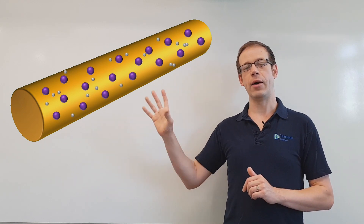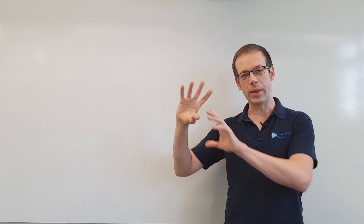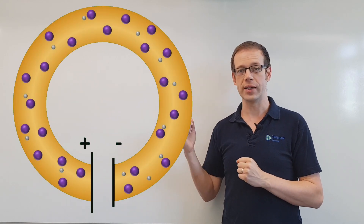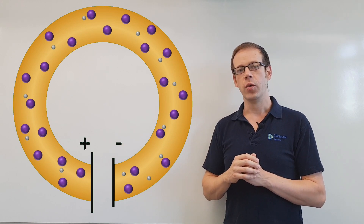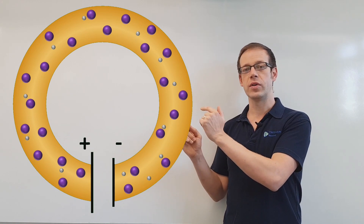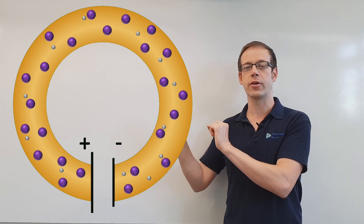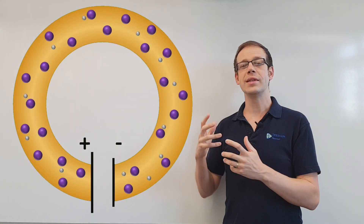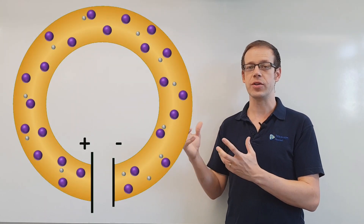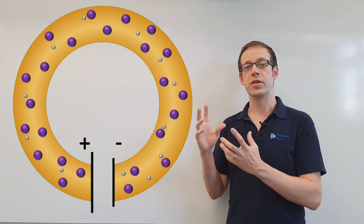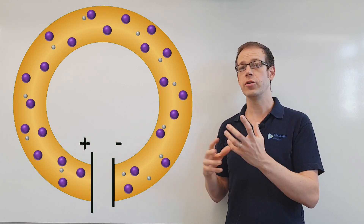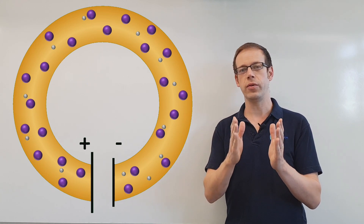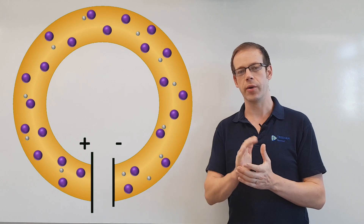Now if we take our piece of copper bar and bend it around so that it forms a loop, and we connect the two ends of that loop to a cell as you can see in this image, we've still got those individual copper atoms with the 29th free electron sitting around them. When this circuit is energised the electrons are going to move in a specific direction - they're no longer going to drift about randomly. So which way do you think the electrons are going to move?